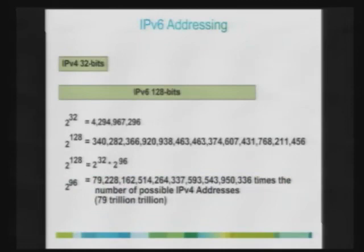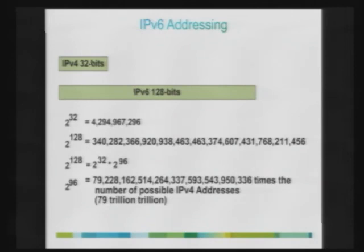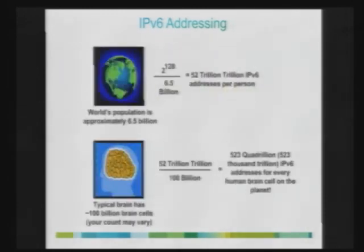With IPv4 we have 32-bit addressing space; with IPv6 we have 128-bit address space. In v4 we have theoretically about 4 billion plus addresses, but the usable space was much smaller due to distribution. With IPv6, you can have a total of 79 trillion trillion addresses. Compared to the 6.5 billion plus world population, every person could have 52 trillion trillion IPv6 addresses — so nobody thinks we are going to run out of IPv6 addresses for generations.